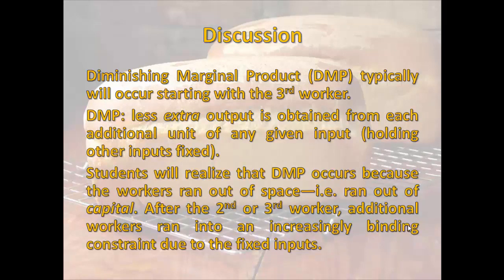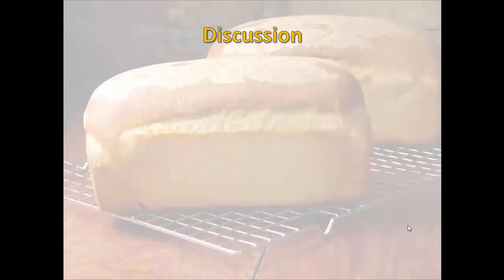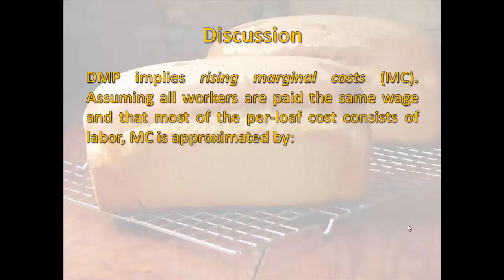Students will realize that diminishing marginal product occurs because the workers run out of space. When asked why, they'll say flat out: we just ran out of space to work. Remember, the space on the chalkboard represents capital — the factory with all its equipment. After the second or third worker, additional workers are running into an increasingly binding constraint due to fixed inputs. It's important to spend time talking about the reasoning behind diminishing marginal product and why we observed it, before moving on to the relationship between diminishing marginal product and rising marginal costs.